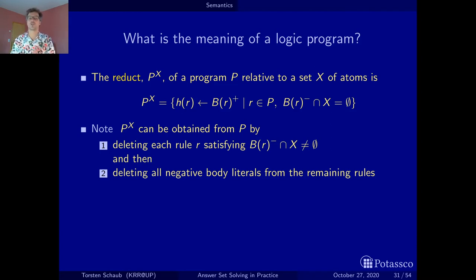Just another view on the reduct. One way to obtain this reduct is to adapt what we've done before. You can obtain the reduct, that is the positive logic program, from the normal logic program by deleting all rules that have atoms in the negative body that belong to X. And then we delete all the remaining negative body literals from the rules that remain. This way we obtain the reduct. And now, that's it. We can define the stable model semantics.